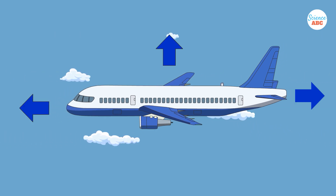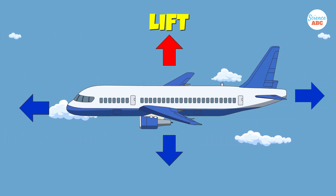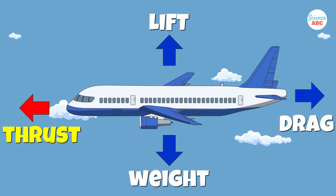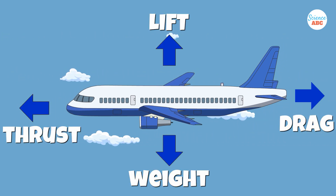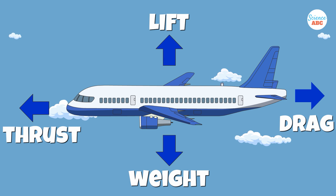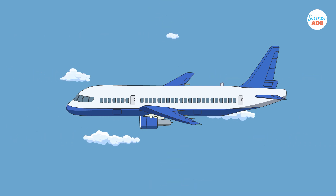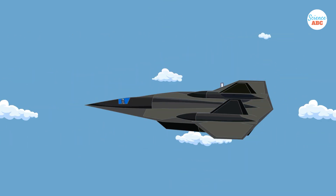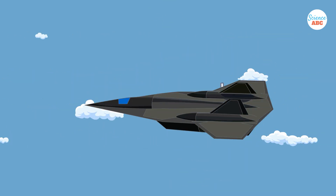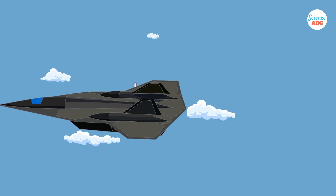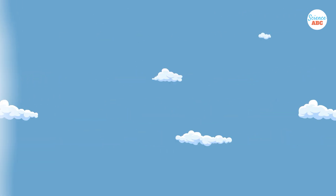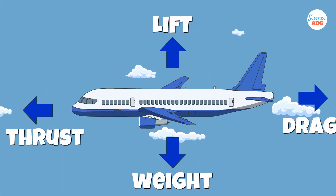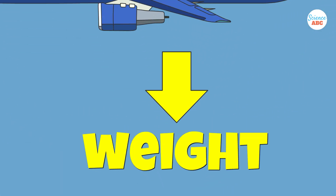When four key forces — lift, weight, drag, and thrust — work together in harmony, they allow massive airplanes to rise and soar through the sky, sometimes speeding fast enough to break the sound barrier. Let's examine these forces one at a time.